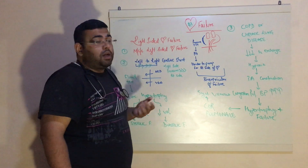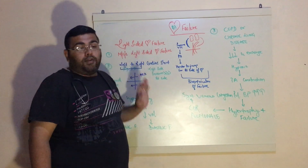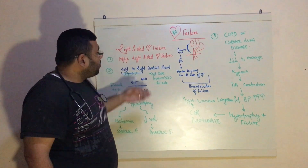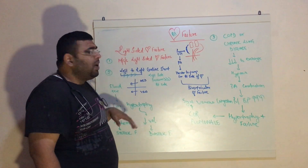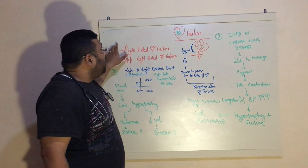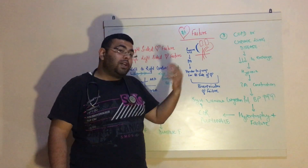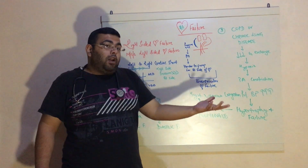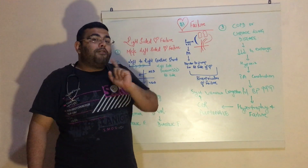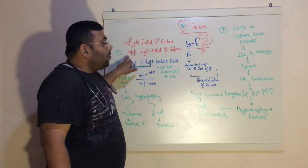One of the most common causes of right-sided heart failure is left-sided heart failure. As the first video discussed, right-sided heart failure is most commonly caused by left-sided heart failure — when the left side fails, the right side is also going to fail.